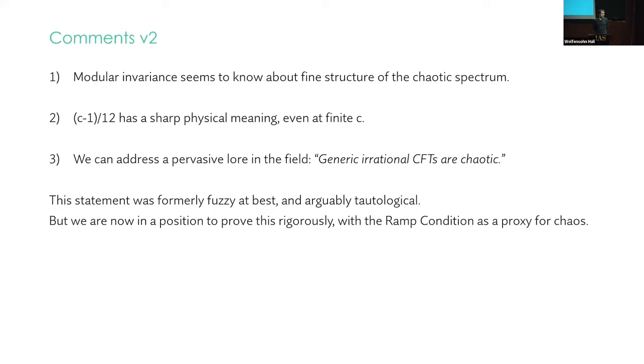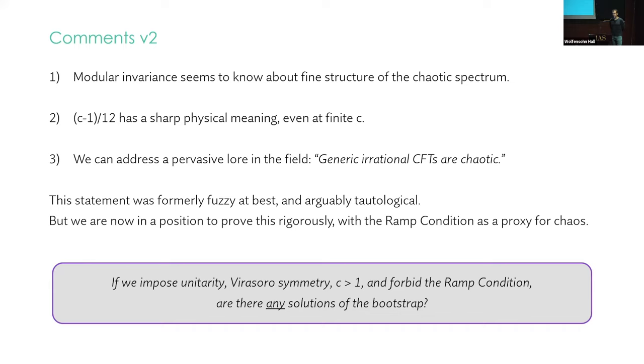And finally, with this chaos condition or ramp condition, we can try to address a pervasive belief in the field, which is that generic irrational 2D CFTs are chaotic. So what exactly does this mean? Well, arguably, this is a tautological statement previously because we didn't have an independent definition of chaos. You have some erratic sporadic spectrum of primaries. We all understand why one would think that this must be chaotic, but it'd be nice to have an independent definition to put some meat on this. And now we do. So we can ask if that's true by inputting it into a bootstrap problem.